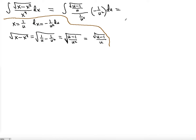As a result, u to the fourth will divide by u squared. U squared will multiply the u, so u to the third is on the bottom and u to the fourth will be on the top. So u to the fourth divided by u to the third is going to be u, and there's a negative sign. So we get negative integral of u times square root of u minus 1 du. It's getting way simpler now.